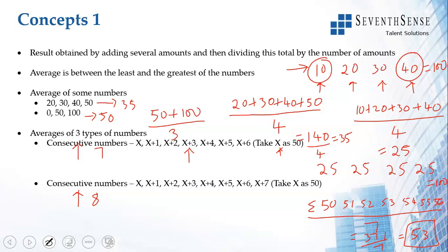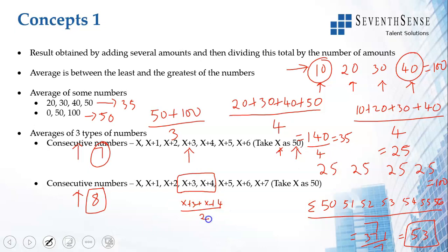If the numbers are consecutive but the count of numbers is even — here we have 8 — you don't have a single middle number. In that case, find the average of the two middle numbers. The two middle values are x+3 and x+4. Their average is (x+3 + x+4) / 2 = (2x+7)/2 = x+3.5. So if x is 50, the average is 53.5.